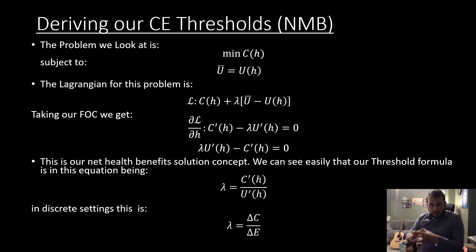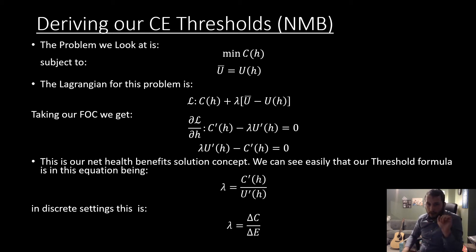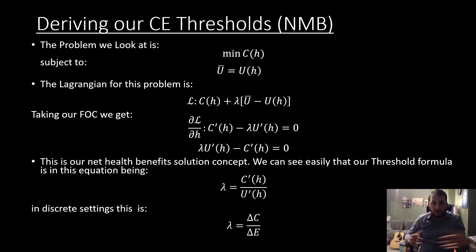So let's first derive this cost-effectiveness threshold. I'm going to argue that this cost-effectiveness threshold comes from a cost minimization problem. Just plugging and chugging, we put in the Lagrangian and take our first order condition. If we rearrange this first order condition, we get our net health benefits — that's the equation we get. And we can easily, from this equation, derive our threshold formula, which is equal to the ratio of the marginal costs and marginal utility from health.